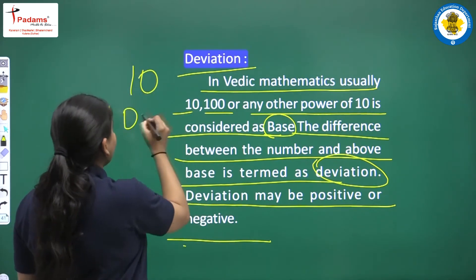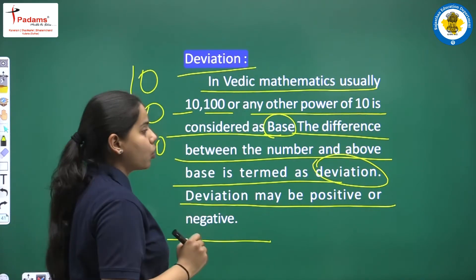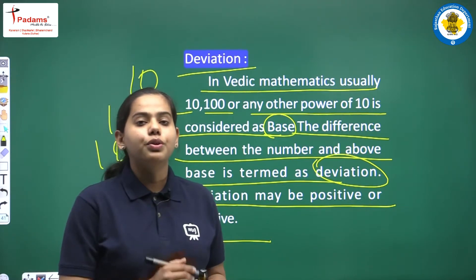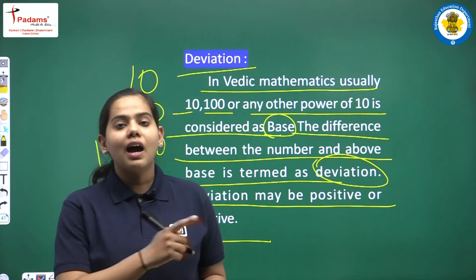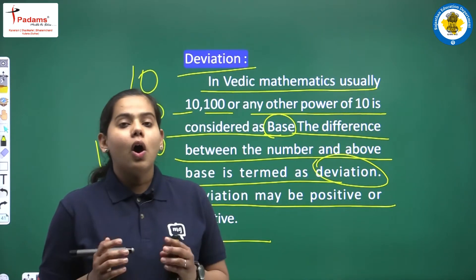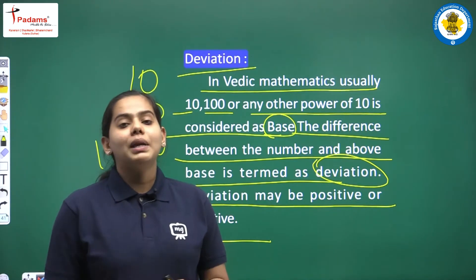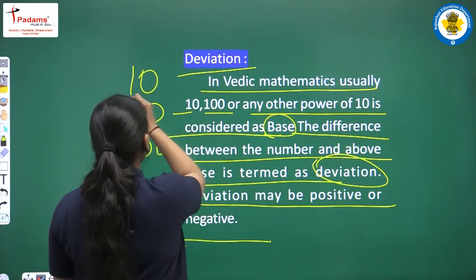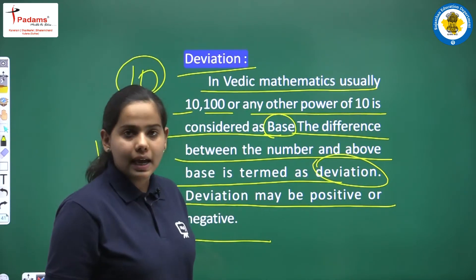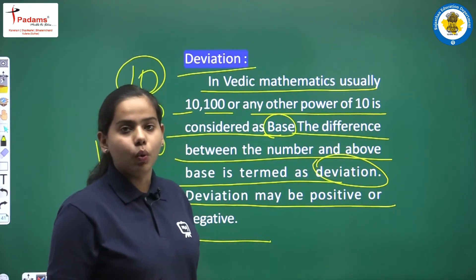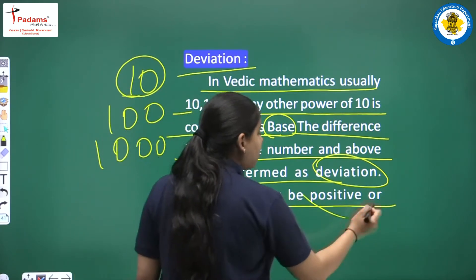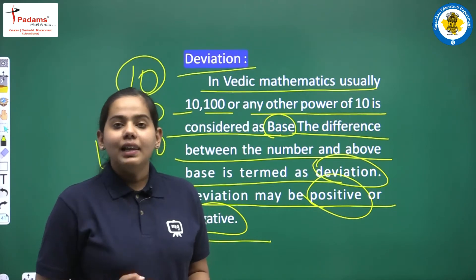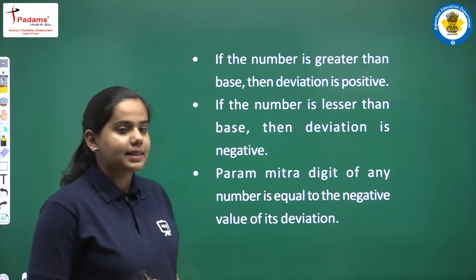We just have to see which power of 10 — 10, 100, 1000 — is the nearest number to the given number. According to that, we use base. Then we subtract the base from the number and we have a difference — that is the deviation. It can be negative or positive. If the number is bigger than the base, deviation will be positive. If it is smaller, it will be negative.